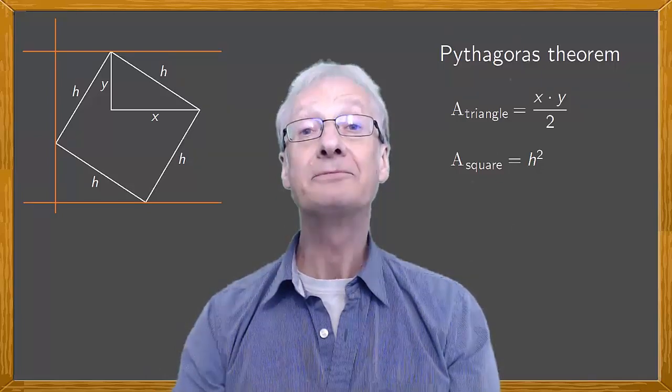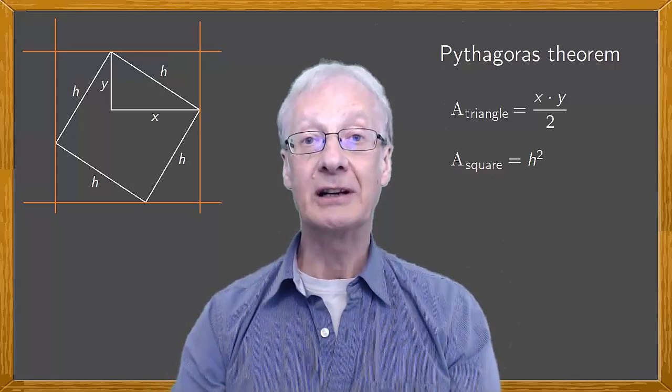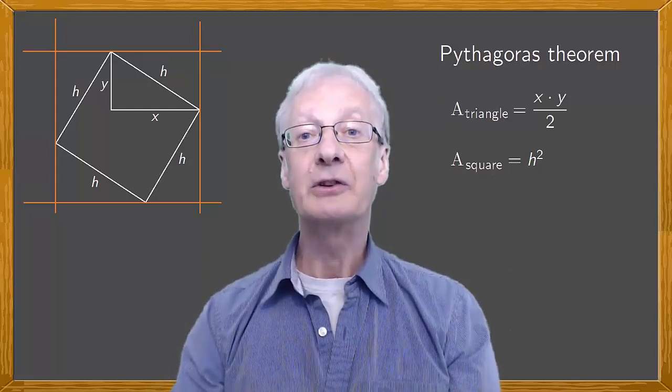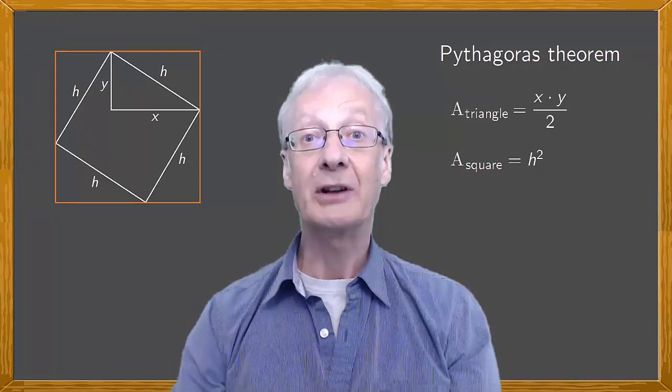From this point, a horizontal line. And finally, from this point, a vertical line. Notice we've obtained a new square. We'll erase the leftovers.